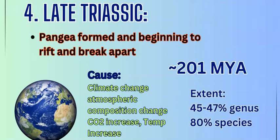The fourth extinction, the late Triassic, was a smaller event related to Pangaea. The two land masses of Gondwanaland and Laurasia had been together for about half a billion years before forming one supercontinent called Pangaea. When Pangaea began to break up and rift into its separate components — including the formation of the Atlantic Ocean around 200 million years ago — it caused a sharp increase in CO2 in the atmosphere and a resulting temperature increase. This took out between 45 and 47% of the genus and 80% of the species.